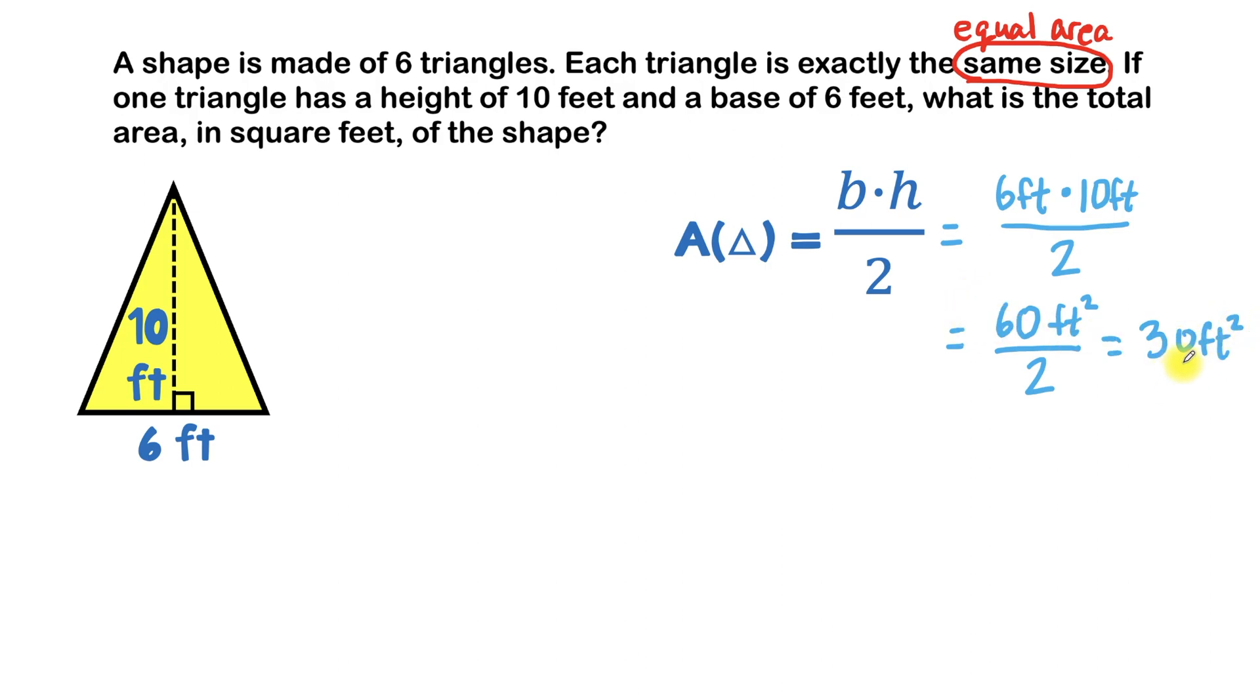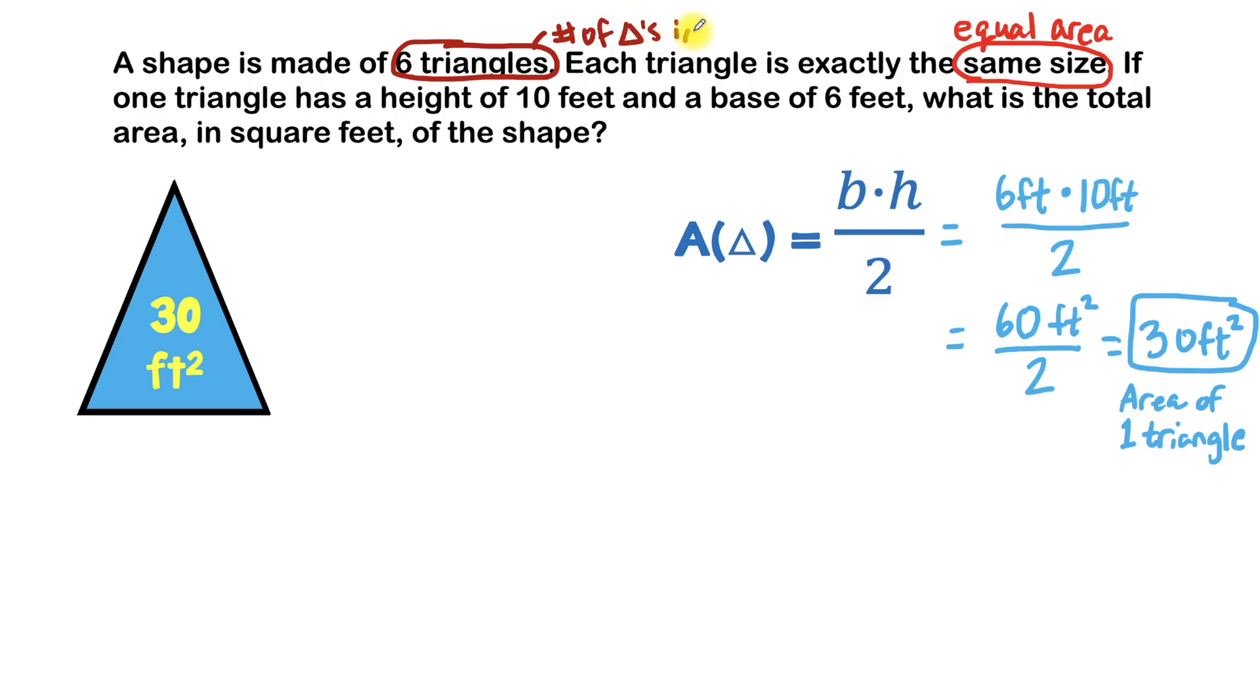Now what exactly is that? That's the area of just one triangle, and that might look something like this. But remember, that's only one triangle, and our shape is made up of six triangles. So what do you think we'll have to do to this 30?